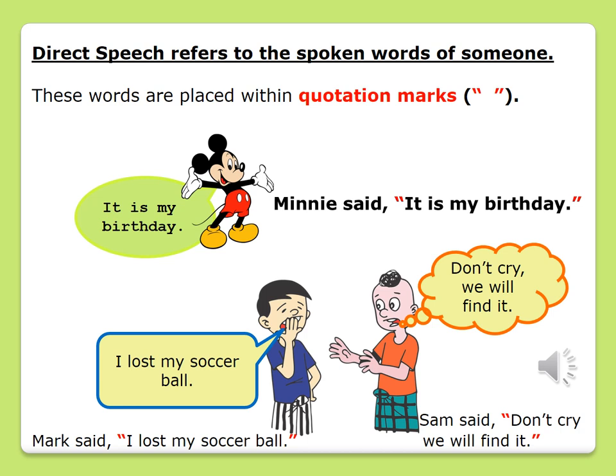Our next example is a conversation between two boys — Mark and Sam. Mark said, "I lost my soccer ball." Sam said, "Don't cry, we will find it." Take note: the words that came out of Mark's mouth, "I lost my soccer ball," have been written within quotation marks. And Sam's words, "Don't cry, we will find it," have also been written within quotation marks.